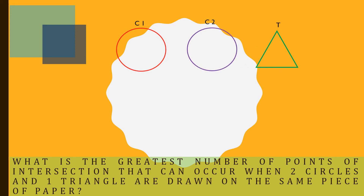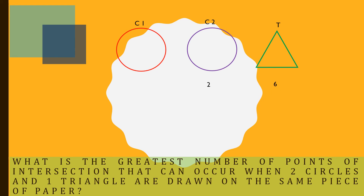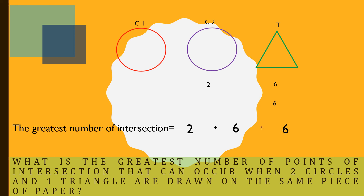C1 and C2 can have maximum two intersections. C1 and T can have maximum six intersections. C2 and T can have maximum six intersections. The greatest number of intersections is 2 plus 6 plus 6, which equals 14.